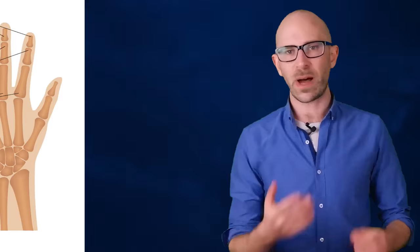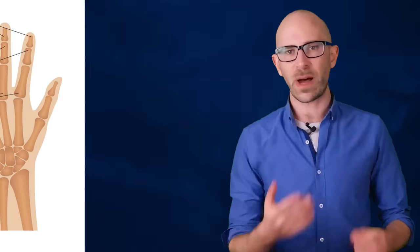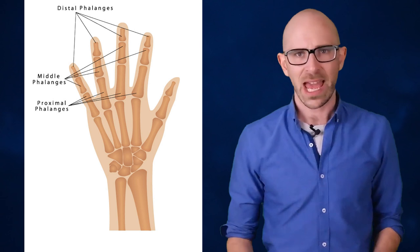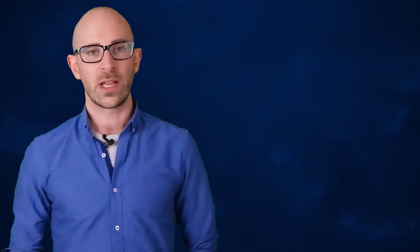The knuckles are the joints formed by the bones in each of our fingers. Each finger consists of three bones called phalanges. They're named based on where they are in relation to the palm of your hand. There's the proximal phalange closest to the palm, the middle phalange, and the distal phalange farthest from the palm. The first knuckle is called the metacarpophalangeal joint, or MCP.